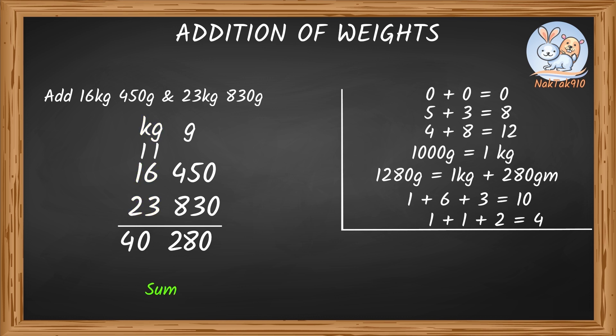So, the sum of 16kg 450g and 23kg 830g is 40kg 280g.